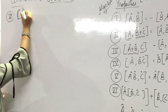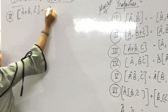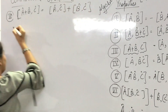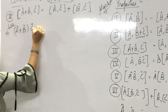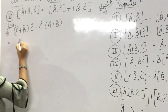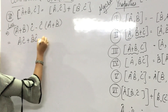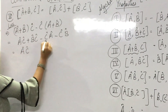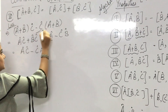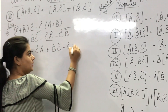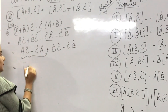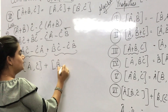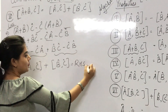Third property: [A+B, C] = [A,C] + [B,C]. Starting from LHS: [A+B, C] = (A+B)C − C(A+B) = AC + BC − CA − CB. Rearranging: (AC − CA) + (BC − CB) = [A,C] + [B,C], which equals RHS. Hence proved.